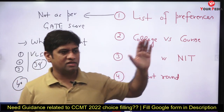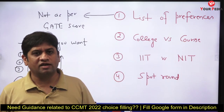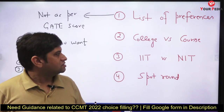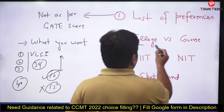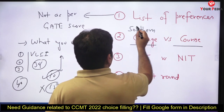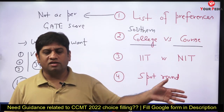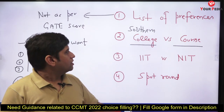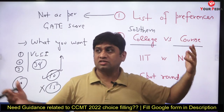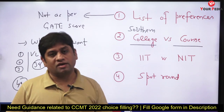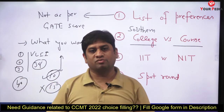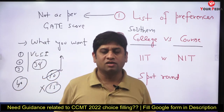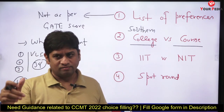The second important point is college versus course. Many students get confused — for example, getting VLSI in a north NIT versus control systems or communication in a south NIT, or design at NIT Allahabad versus manufacturing at NIT Suratkal. The answer comes down to placement. Southern NITs — Trichy, Suratkal, Warangal, Calicut — are very good. Some courses are also very job-oriented: VLSI, industrial engineering, data science. Combine both factors and see where placement is better.